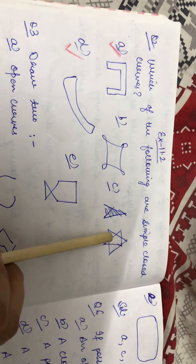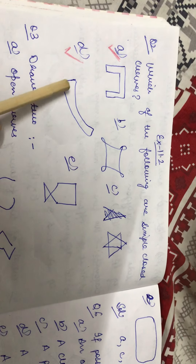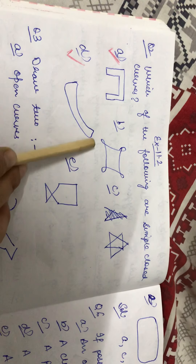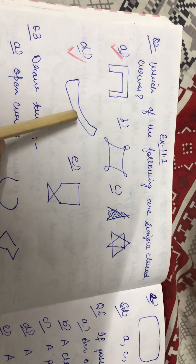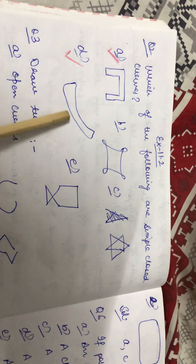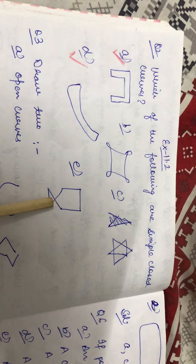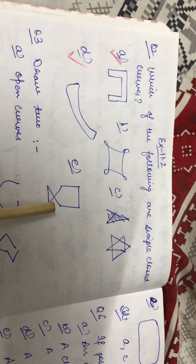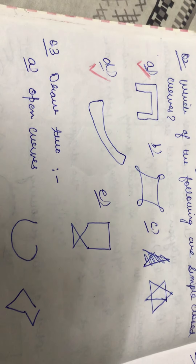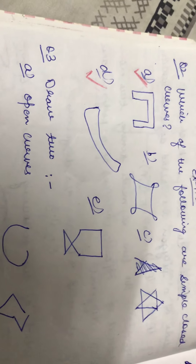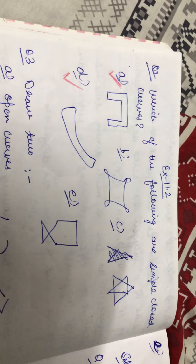C part is also intersecting. In the D part it is closed and it doesn't intersect, so it is a simple closed curve. In the E part it is intersecting, so it is not a simple closed curve. So we have A and D parts are simple closed curves.